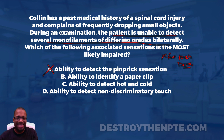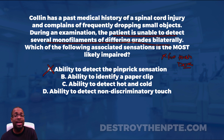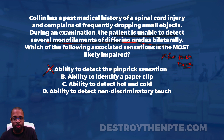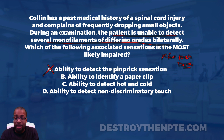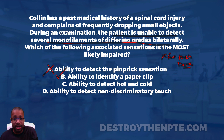Answer B: ability to identify a paperclip. That ability is known as stereognosis — the ability to identify objects with the eyes closed. Stereognosis travels through the dorsal column medial lemniscus. Since fine touch is impaired and both travel through DCML, we would expect stereognosis to be impaired as well. Check mark — this is the associated sensation.